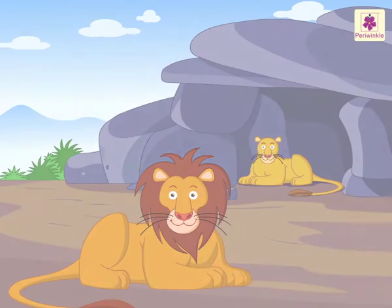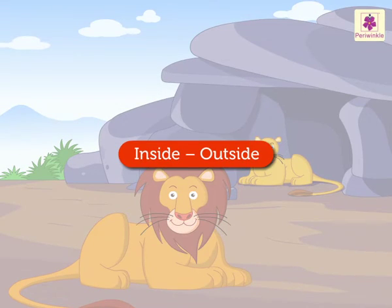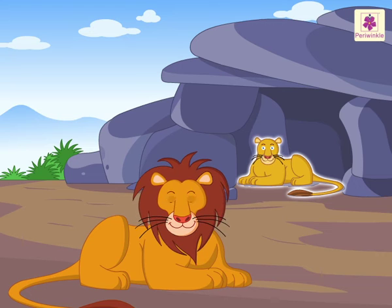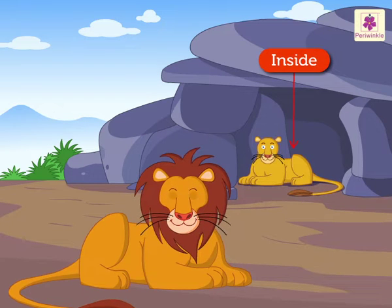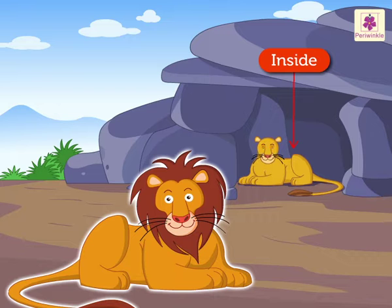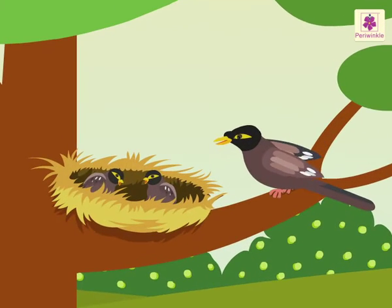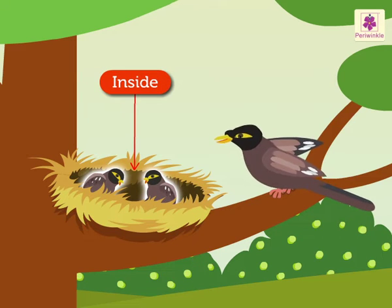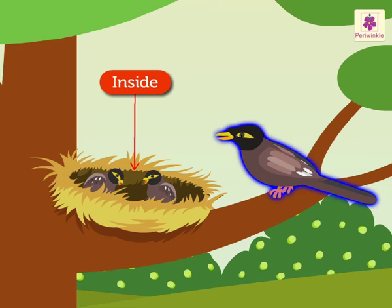Next is inside, outside. Look at the lioness. She is inside the cave. Now, look at the lion. He is sitting outside the cave. Can you see a nest? The baby birds are inside the nest. And the mother bird is outside the nest.